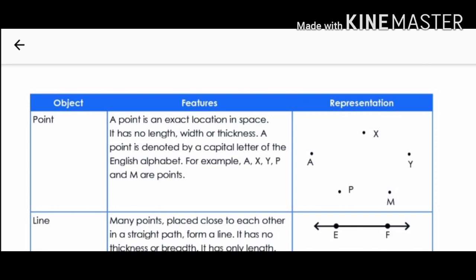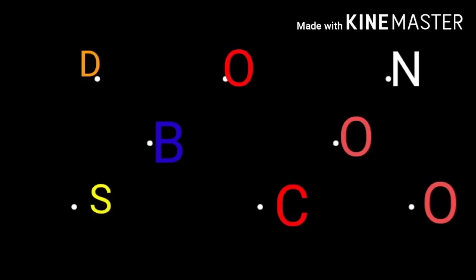We can denote a point by any capital letter of the English alphabet. In geometry, a point is shown as a dot. Can you see this beautiful picture? There are many points here which are denoted by different letters. I am sure you all are happy to see our school name here. Can you denote some points with the initial of your name? Pause the video and do it now. Remember, the letter should be in capital.